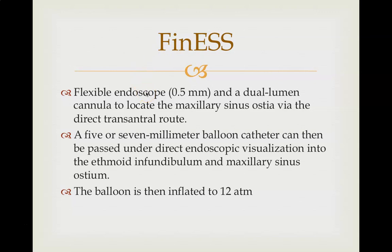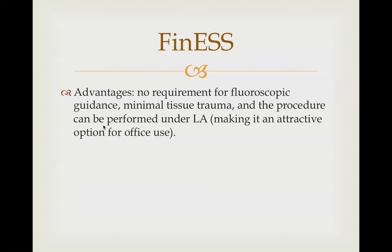The next device is called Finness — Functional Infundibular Endoscopic Sinus System. In this device there is a flexible endoscope of 0.5 mm and a double-lumen cannula to locate the maxillary sinus via direct transcentral route, which was not possible with the previous device. A 5 to 7 mm balloon catheter can be passed under direct endoscopic visualization into the ethmoidal infundibulum and maxillary sinus, and the balloon is inflated up to 12 atmospheric pressure.